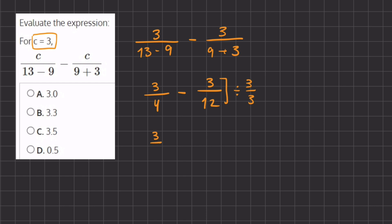And so we are left with 3 divided by 4, three-fourths as our first fraction. And our second fraction is one-fourth because 3 divided by 3 gives us 1, and 12 divided by 3 gives us 4.